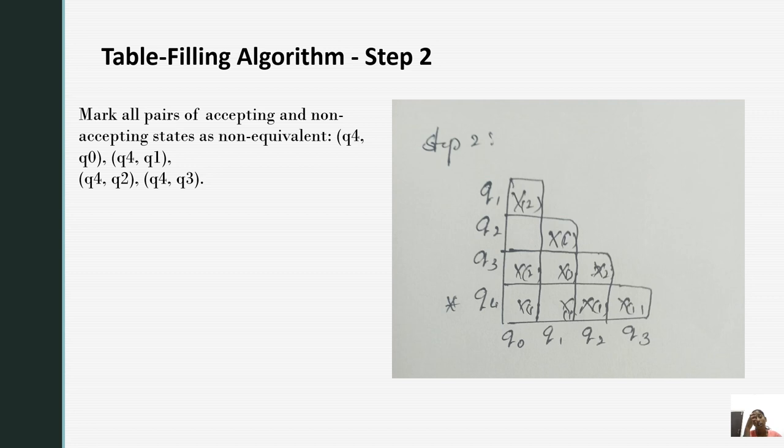Now, let us see step 2. Mark all pairs of accepting and non-accepting states as non-equivalent. For example, Q4 is the final state. So, we have to mark pairs with Q4: Q0 with Q4, Q1 with Q4, Q2 with Q4, and Q3 with Q4.